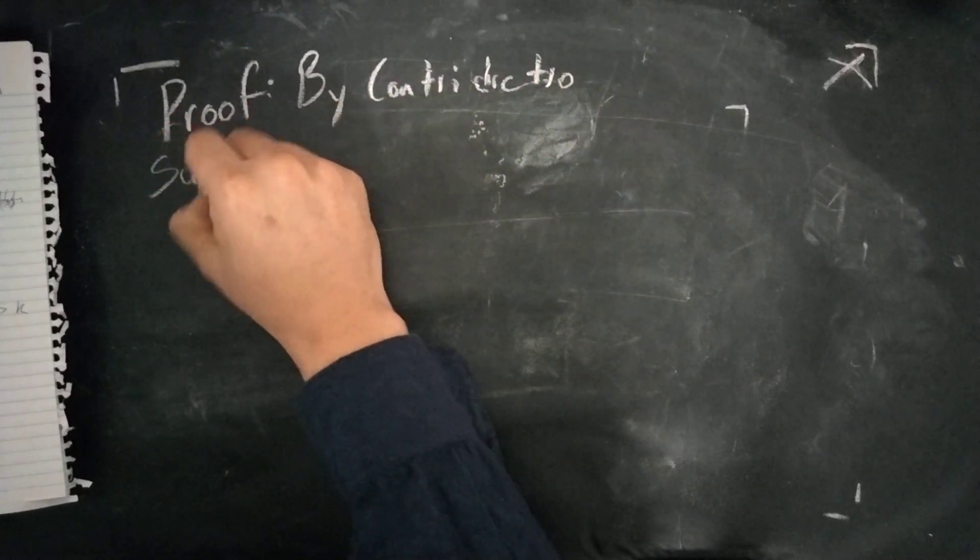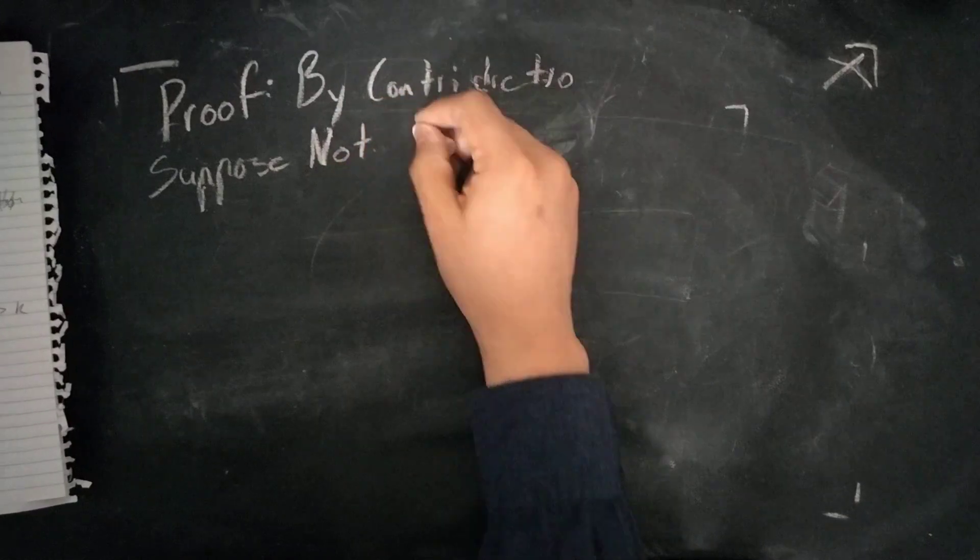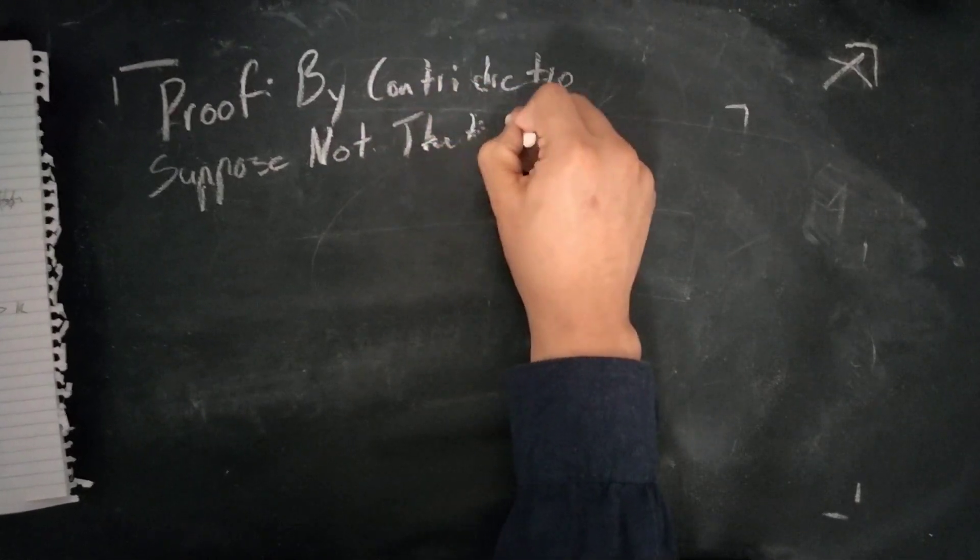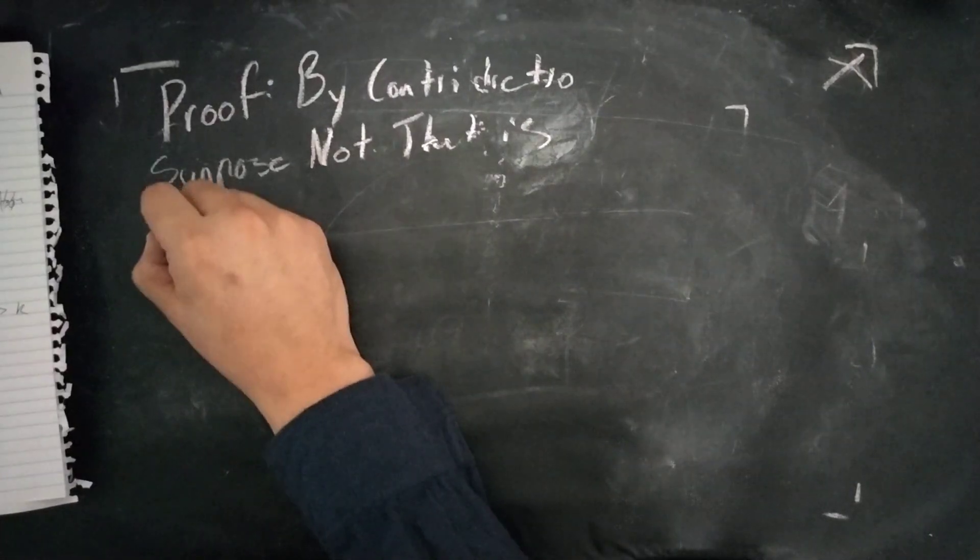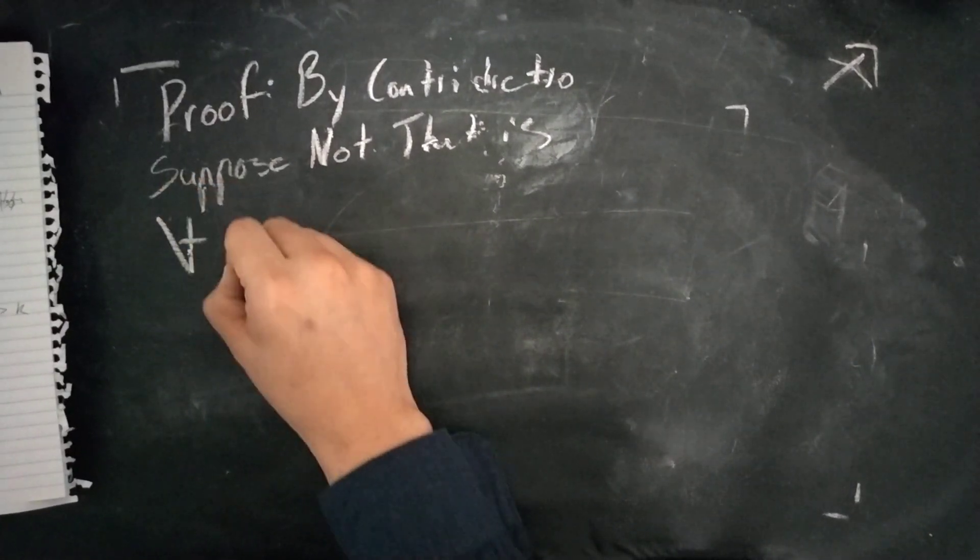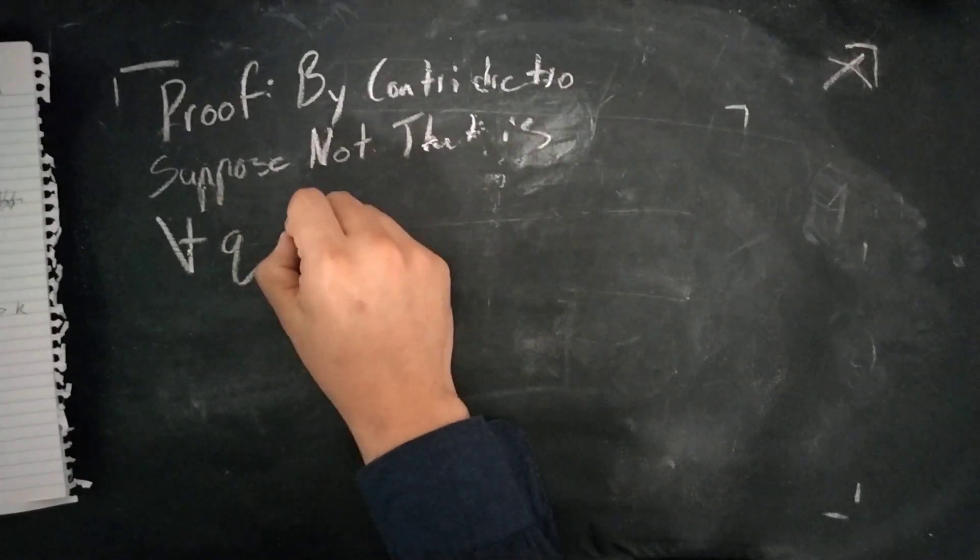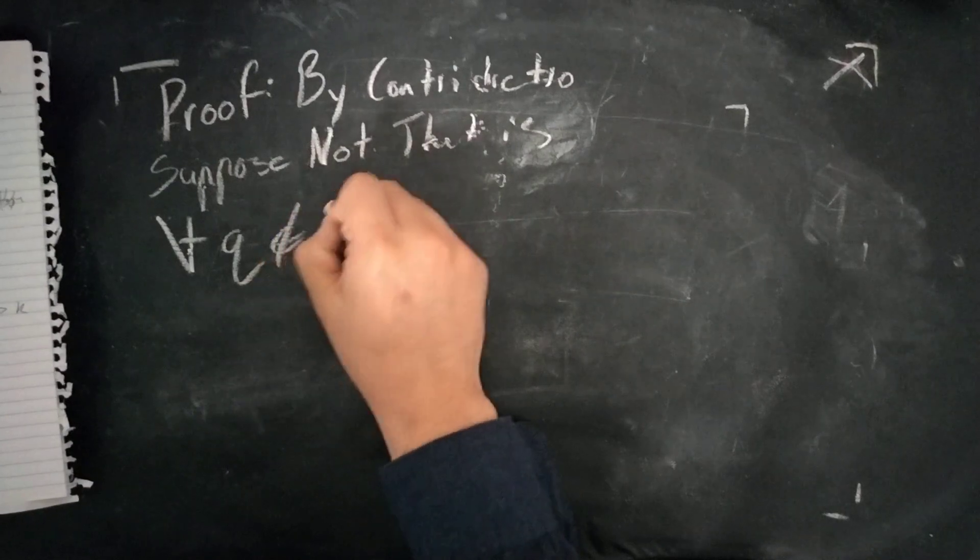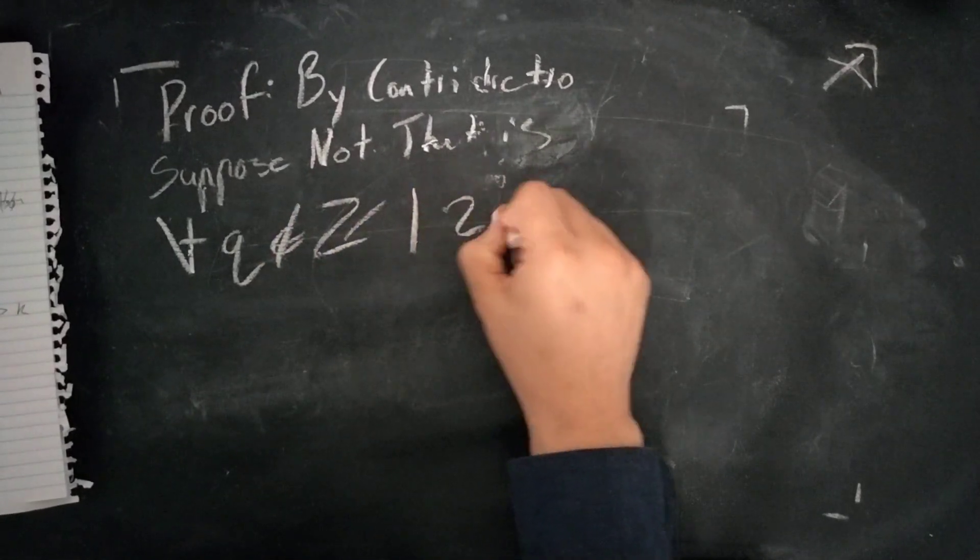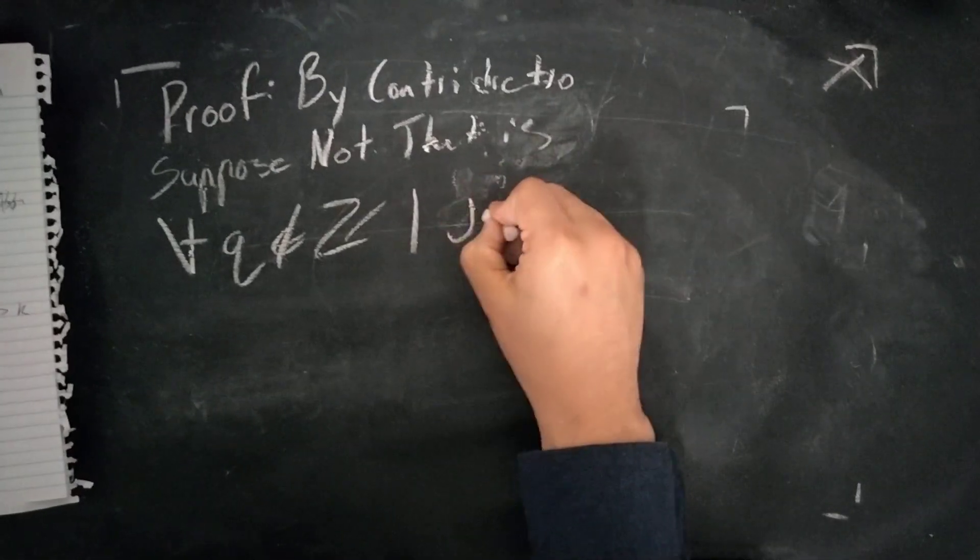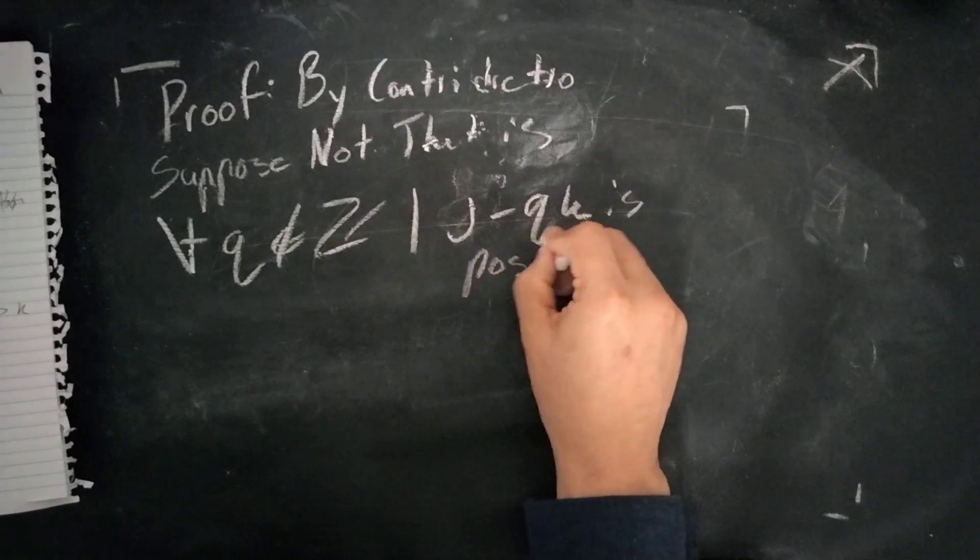We're going to say, suppose not. That is, in this case, we're going to say that for all, that there is no integer Q in the integers, such that J minus QK is positive.